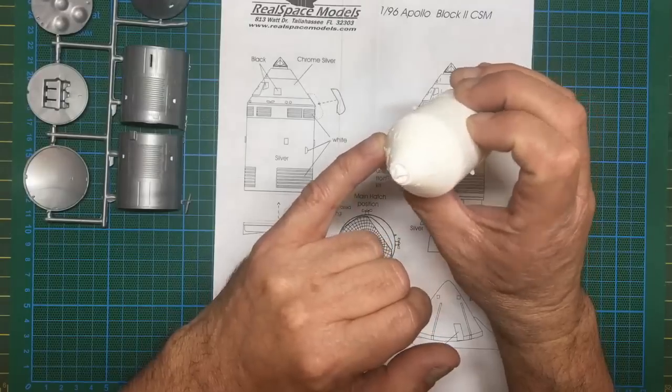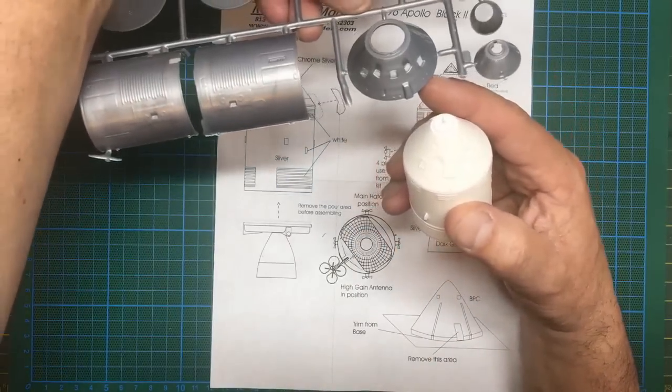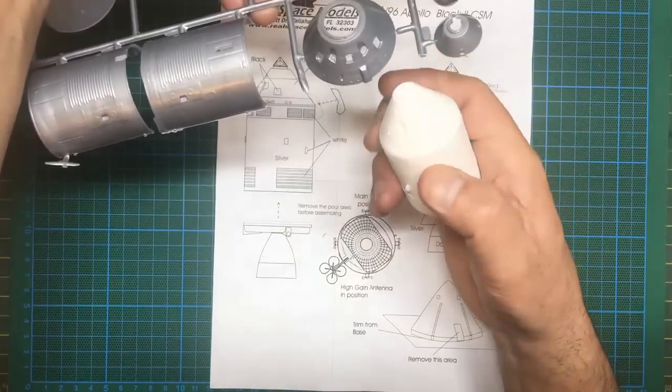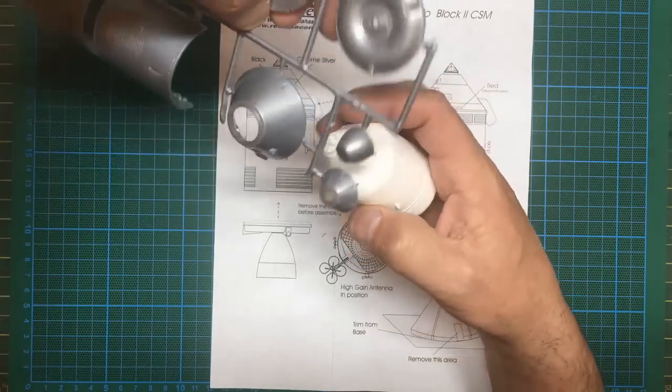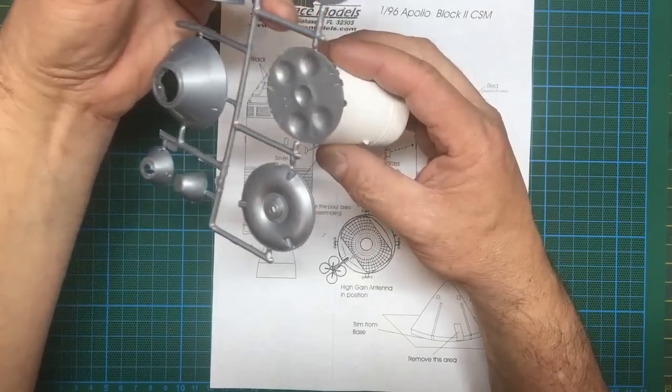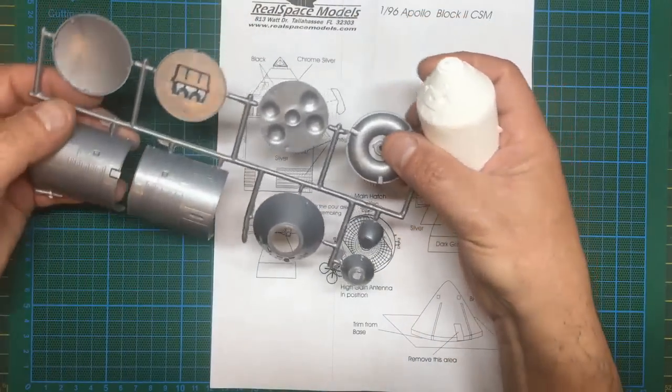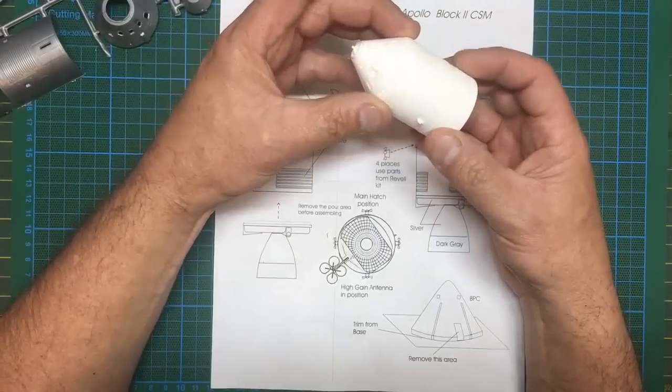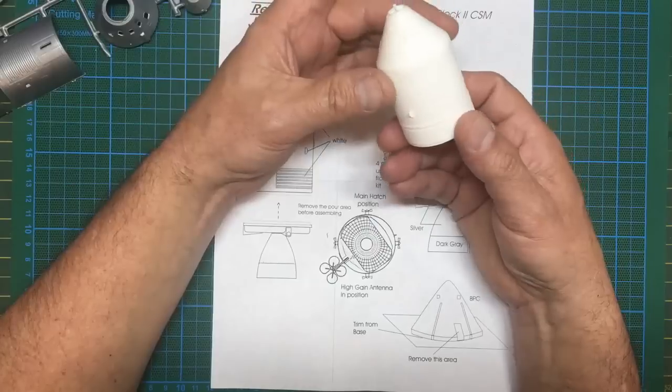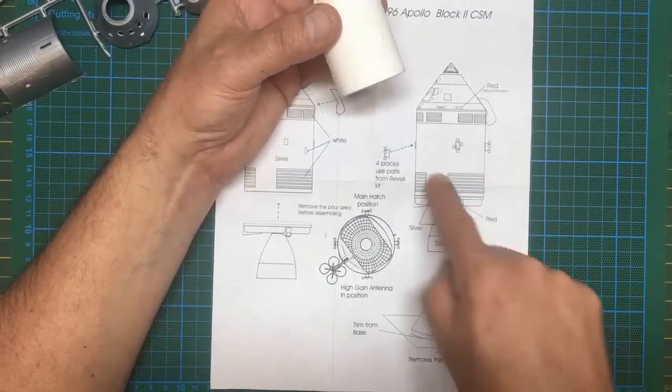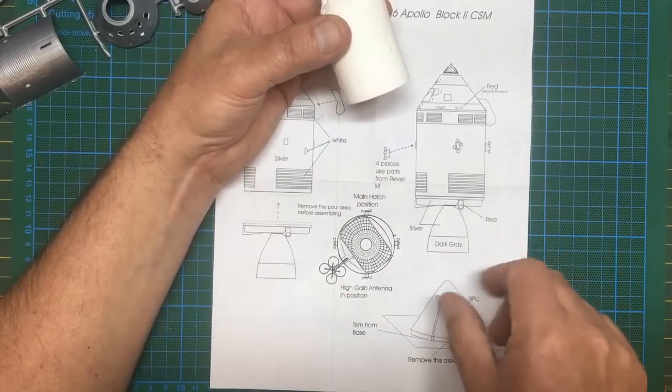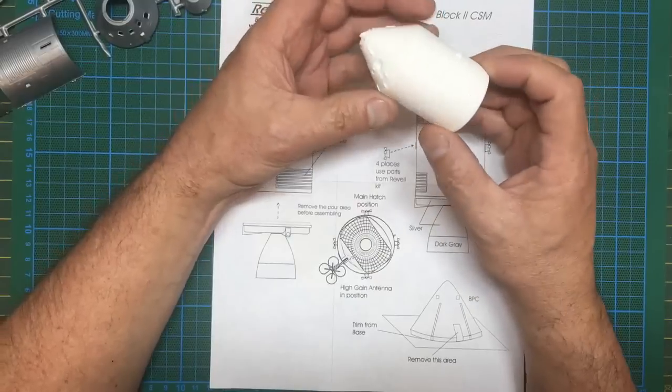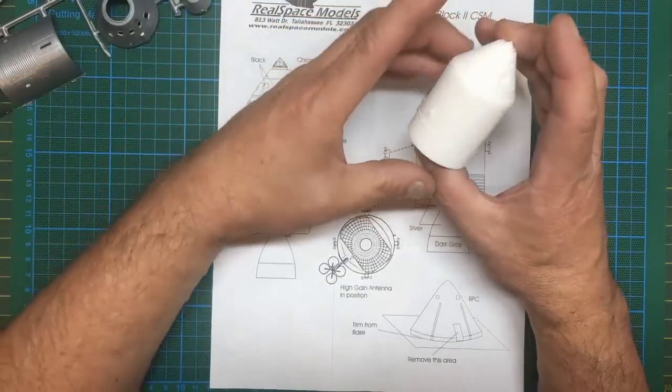You can see the detail on the actual command module going around is far superior to the detail on the Revell kit. It's fairly flashy and fairly chunky, whereas on here we've got the correct thruster detail here and on the sides. When we move around to the rear side, the detail is much better. One downside, if there is a disadvantage with this, you can't take the command module away from the service module, but then if you don't want to play with your model, that's not going to bother you. This isn't a toy, this is an accurate model for display.